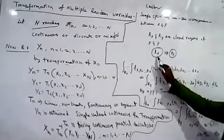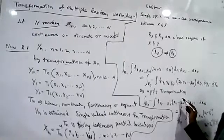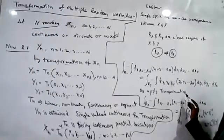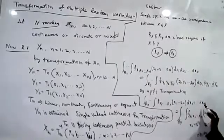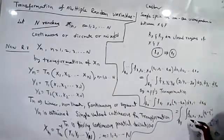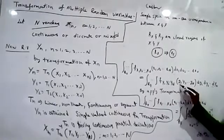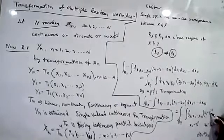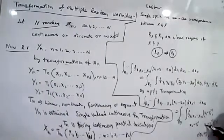The region R_x is mapped to the region R_y. We obtain y by applying a transformation to x. On the right side, x_1 is equal to T_1 inverse, x_2 is T_2 inverse, and x_n is T_n inverse. There is also a factor |J| — the Jacobian.